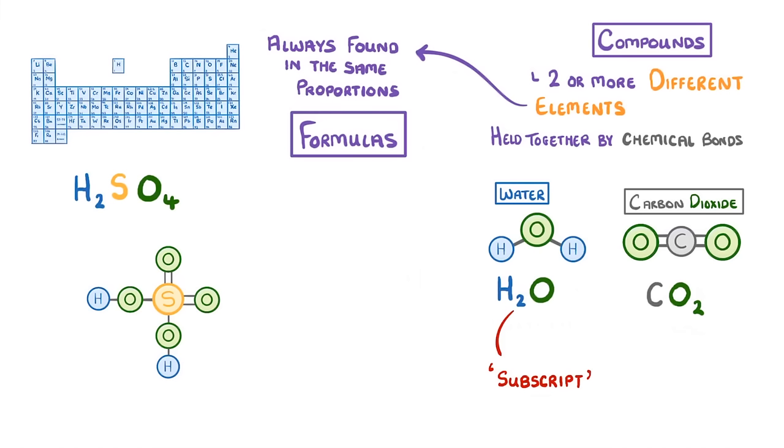Sometimes you might also see brackets in formulas, such as in calcium hydroxide. Just like in maths, the brackets effectively group together everything inside them. And then the number on the outside of the brackets tells us how many of those groups there'll be. So in this case, there's one calcium atom and two groups of OH.